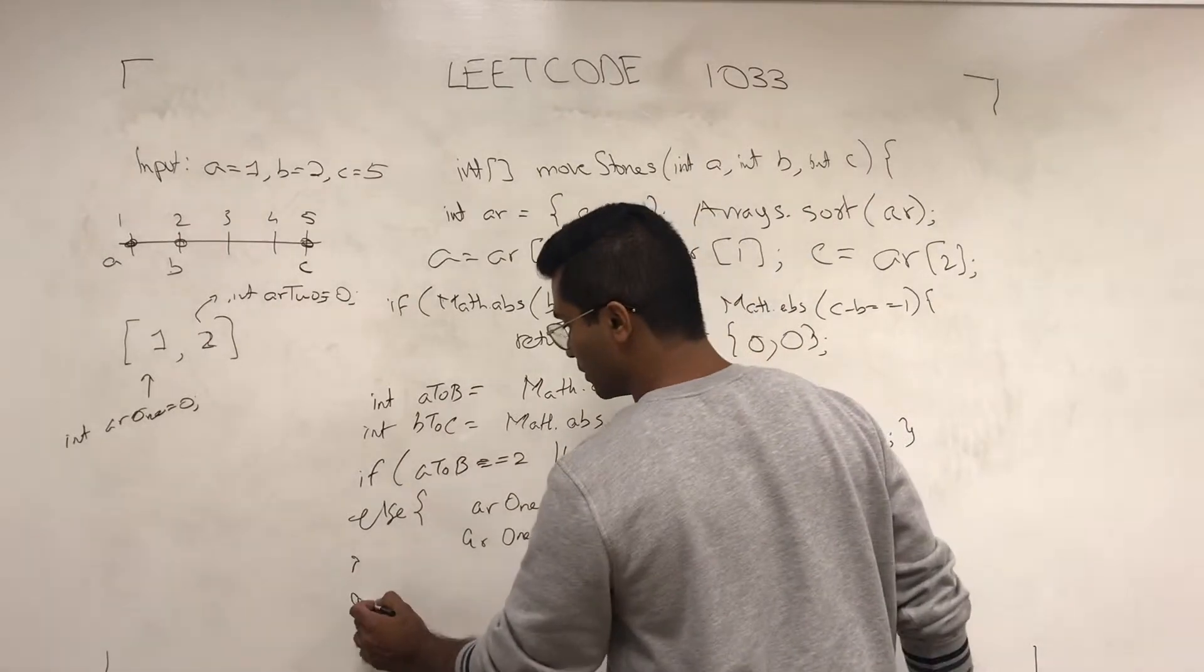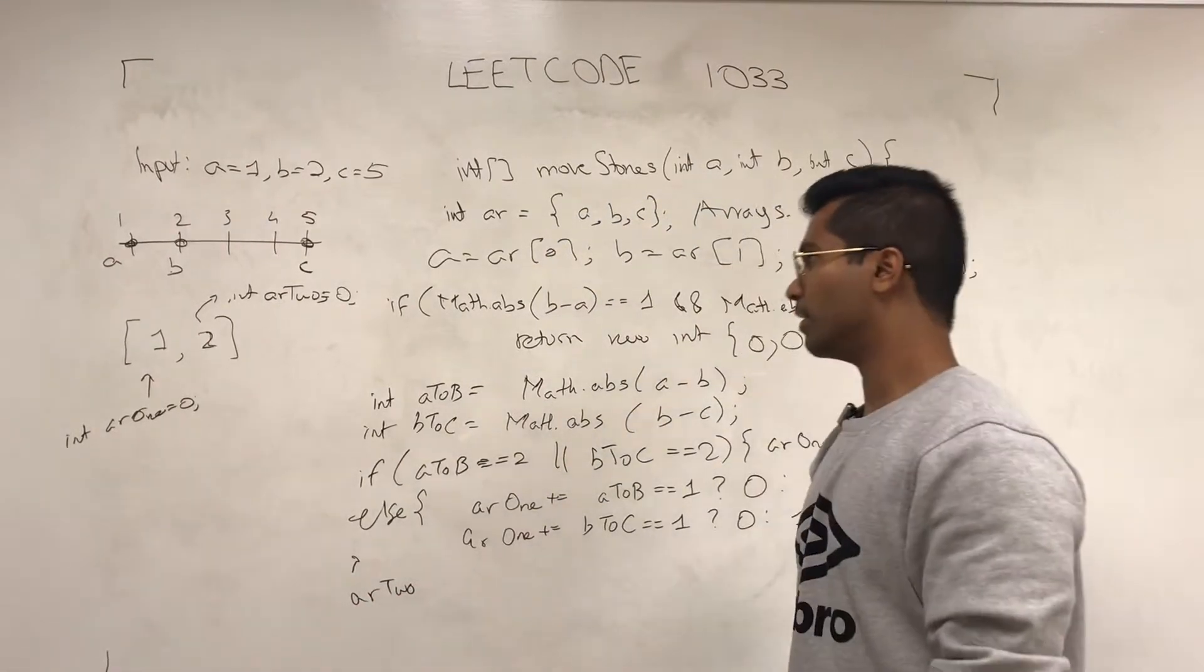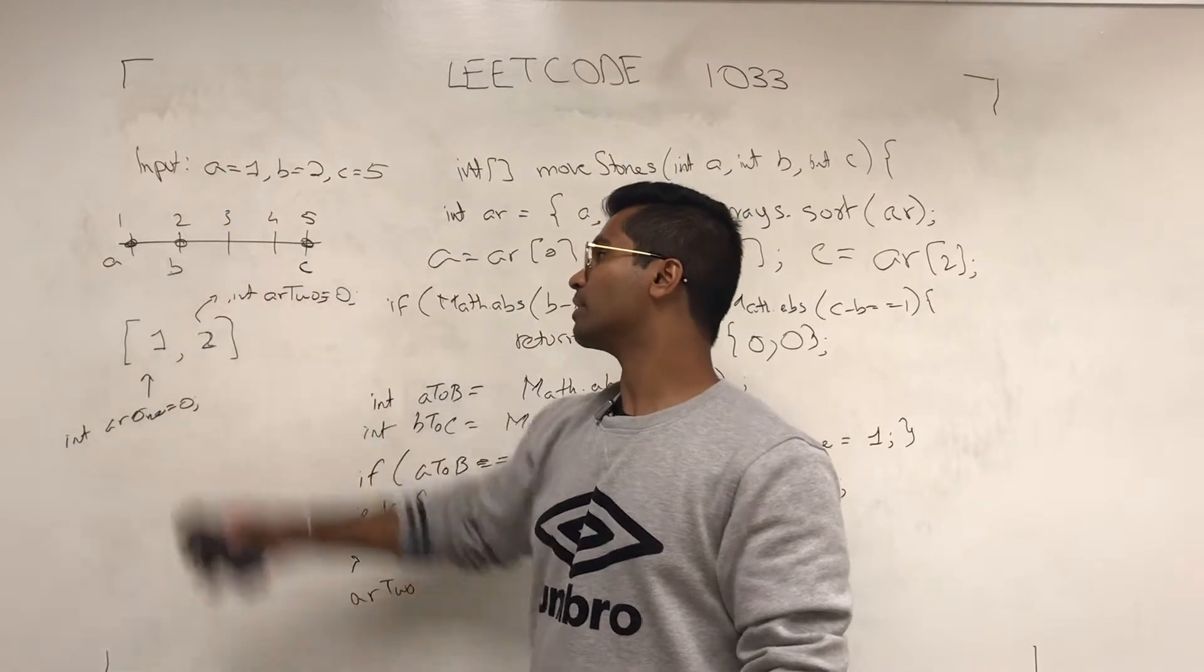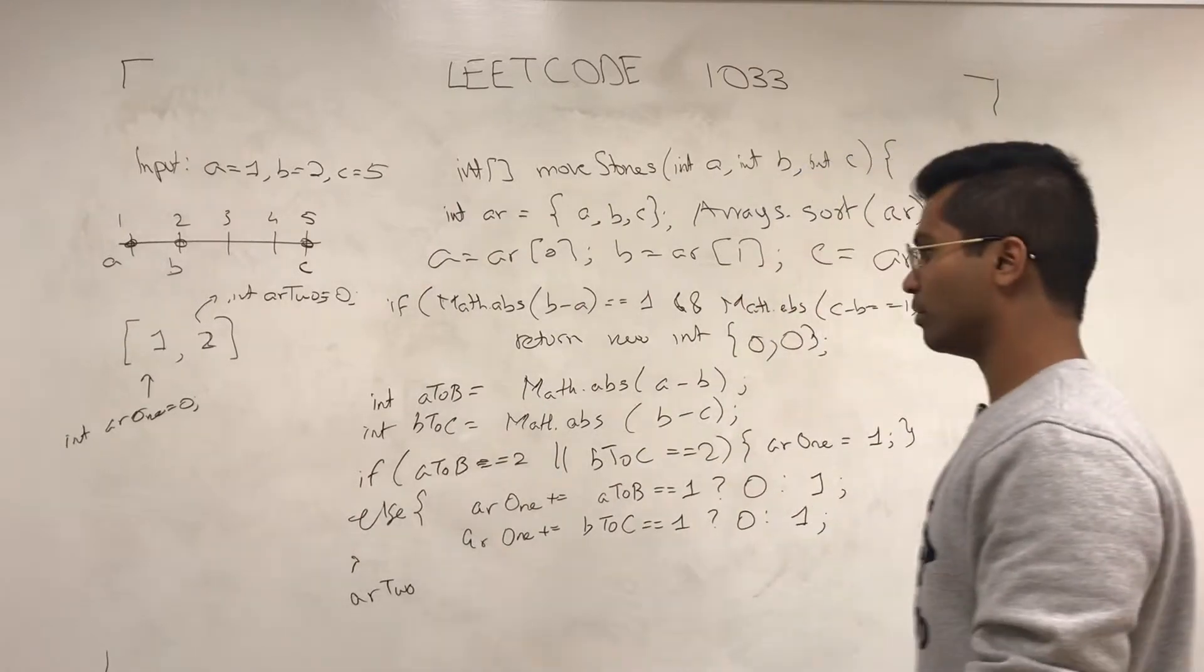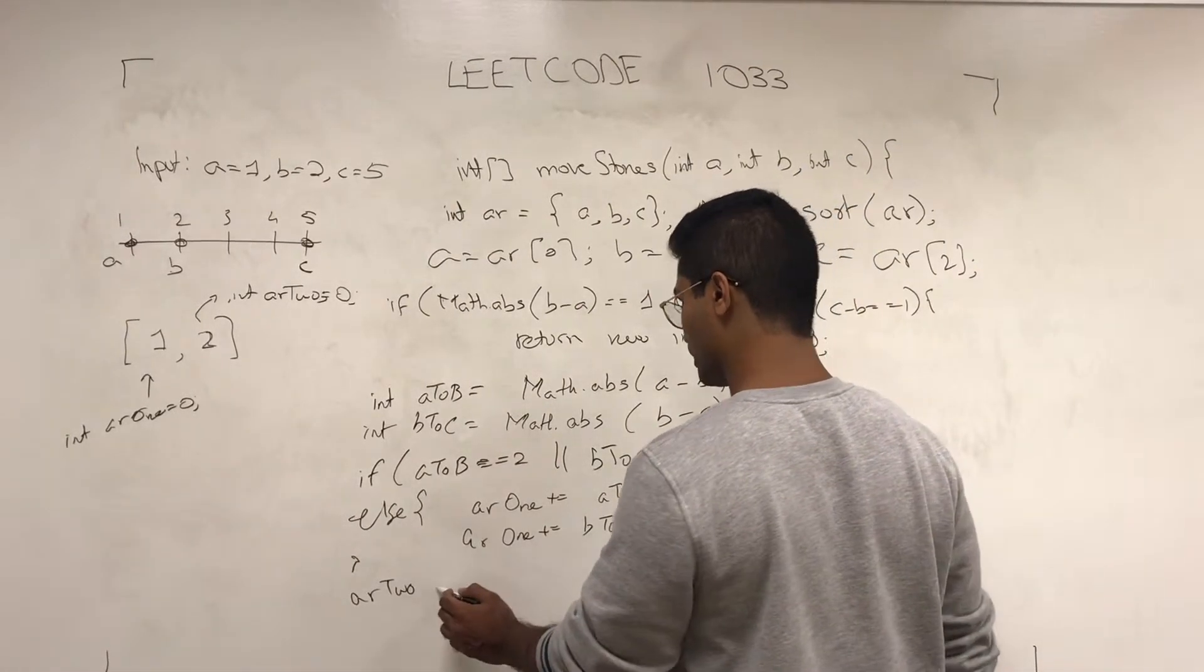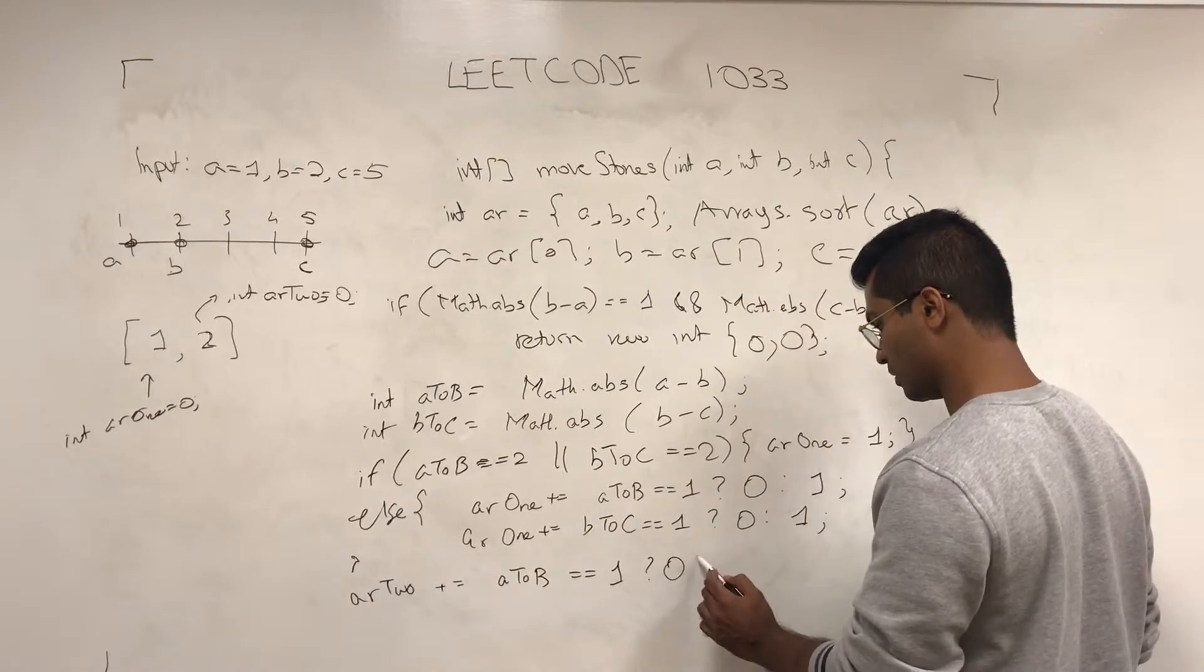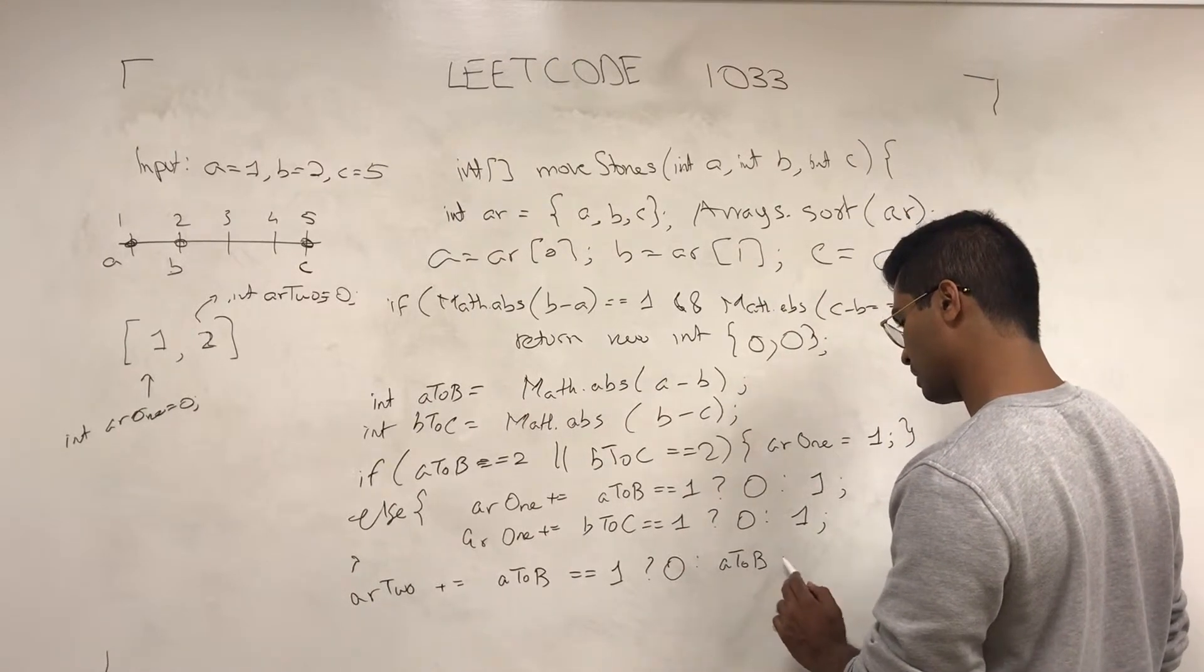Now we have to talk about AR2. AR2 is pretty much going to be the number of steps away minus 1. If there's 3 steps away, you just have to move it 1, 2. Before just assigning it, however, we just need to check. AR2 is incremented by AtoB. Is it 1? Then you're incremented by 0, else you do AtoB minus 1.